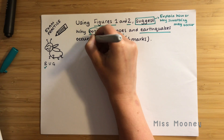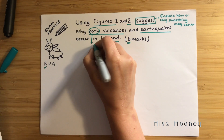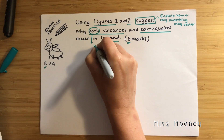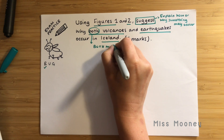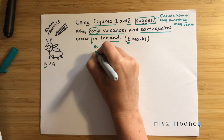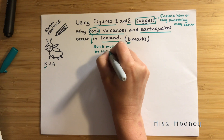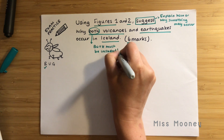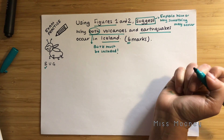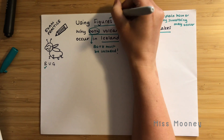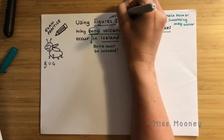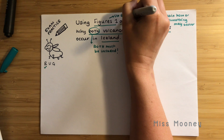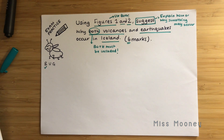Check the things that you have underlined: both volcanoes and earthquakes. We must use both in our answers — we can't just use volcanoes or earthquakes. We also need to make sure we are focusing on figures one and two, using both again, and we are talking about Iceland specifically.